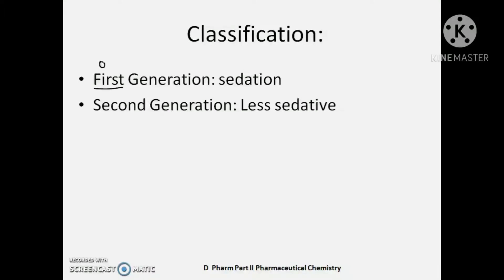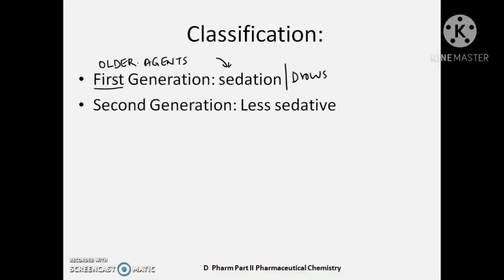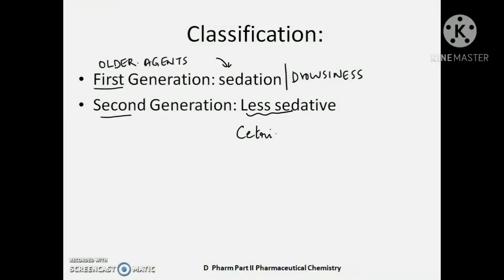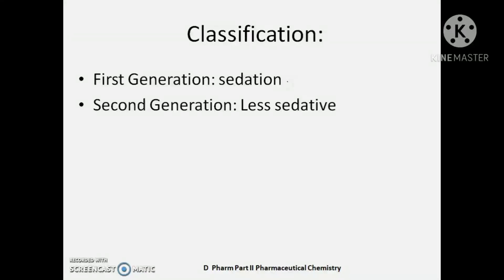Now we will return to the classification of antihistamins. Antihistamins can be classified into first generation antihistamins or older agents, and they have the main disadvantage of producing sedation or drowsiness, sleepiness. Hence, newer agents or second generation antihistamins were developed and they are found to be less sedative. A common example for a second generation antihistamin is cetirizine. We are not going to learn about the second generation antihistamins as your syllabus mentions only the first generation antihistamins.